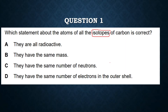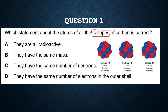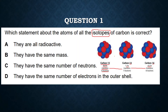For example, carbon-12 has 98.9% abundance, six protons, six neutrons. Then comes carbon-13 and carbon-14, which have very low percentages. The number of protons are the same, and because carbon is an atom, the number of electrons should also be the same — six electrons in all three isotopes.